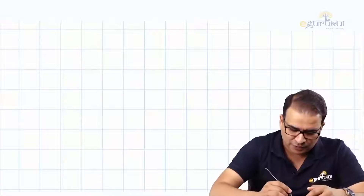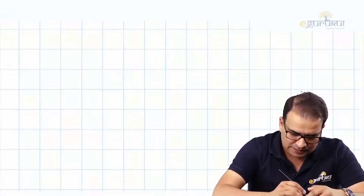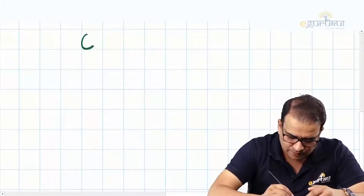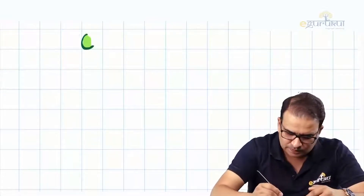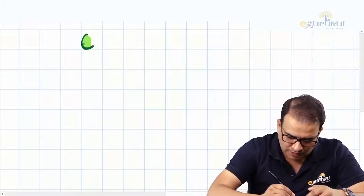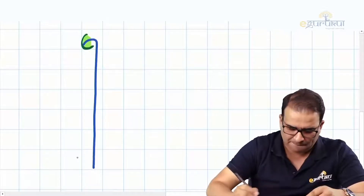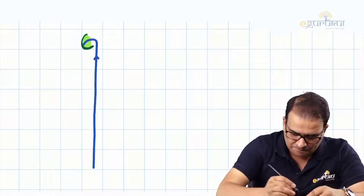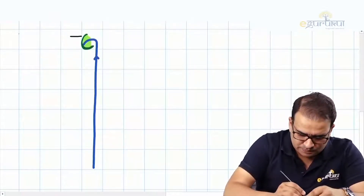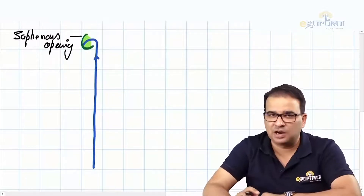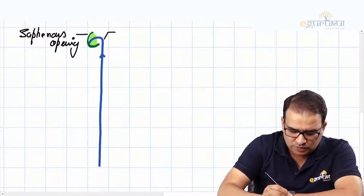Let me put the schematic picture. Here is the saphenous opening, which you know is covered with the cribriform fascia. That is where the great saphenous vein is entering into. The saphenous opening is present in the deep fascia or fascia lata of the thigh.